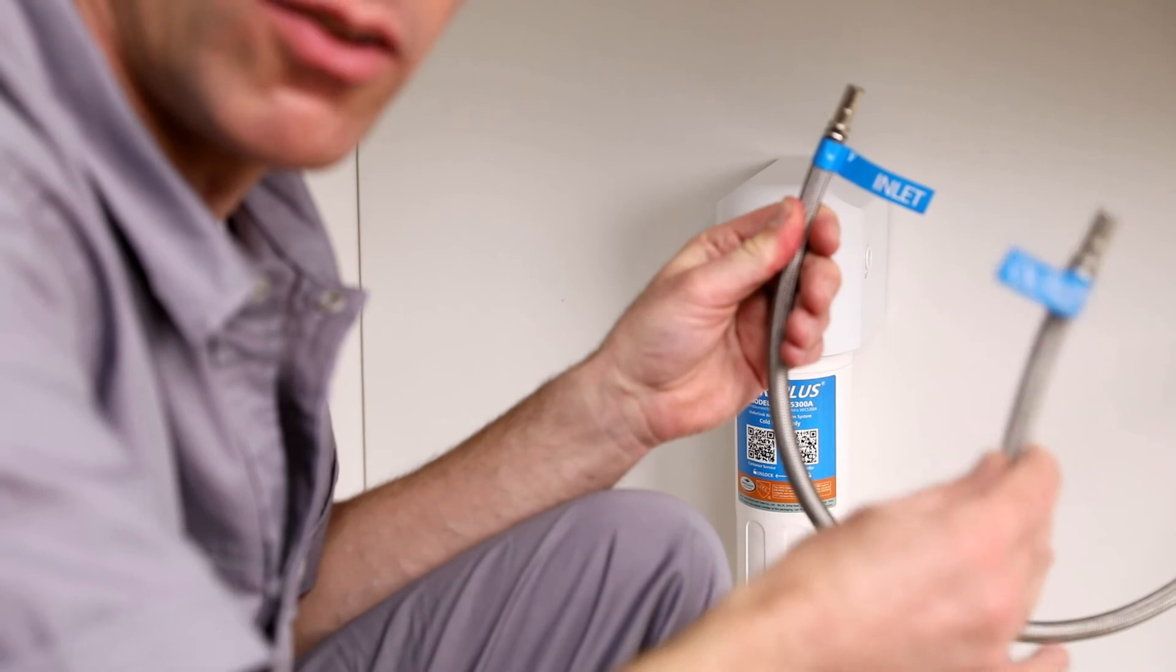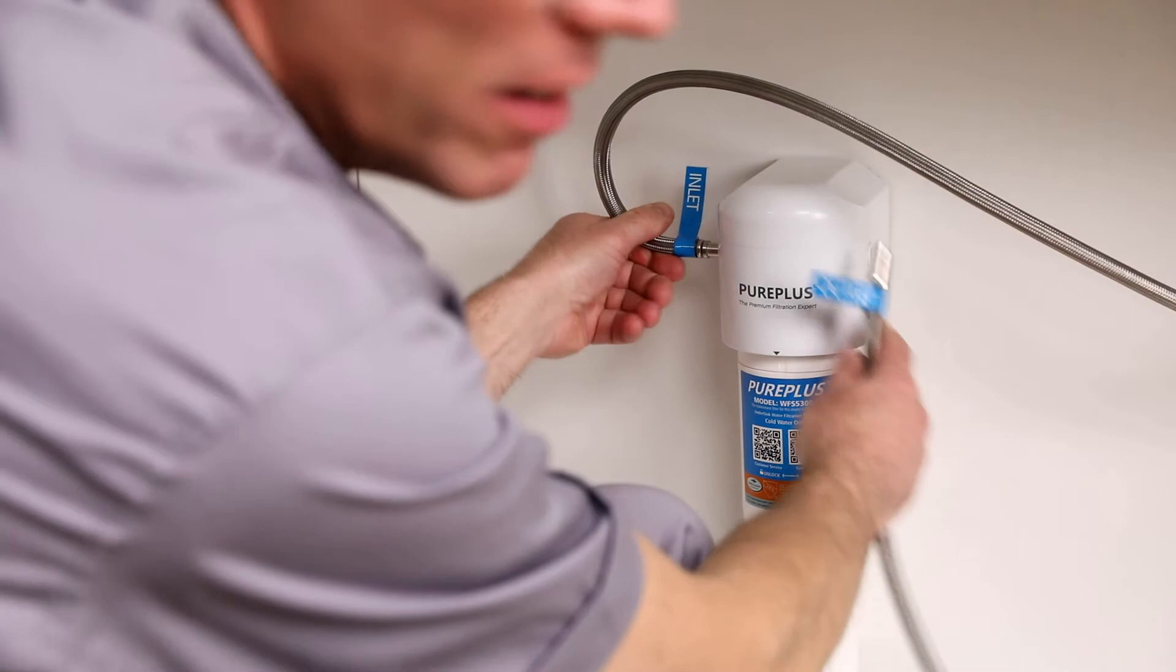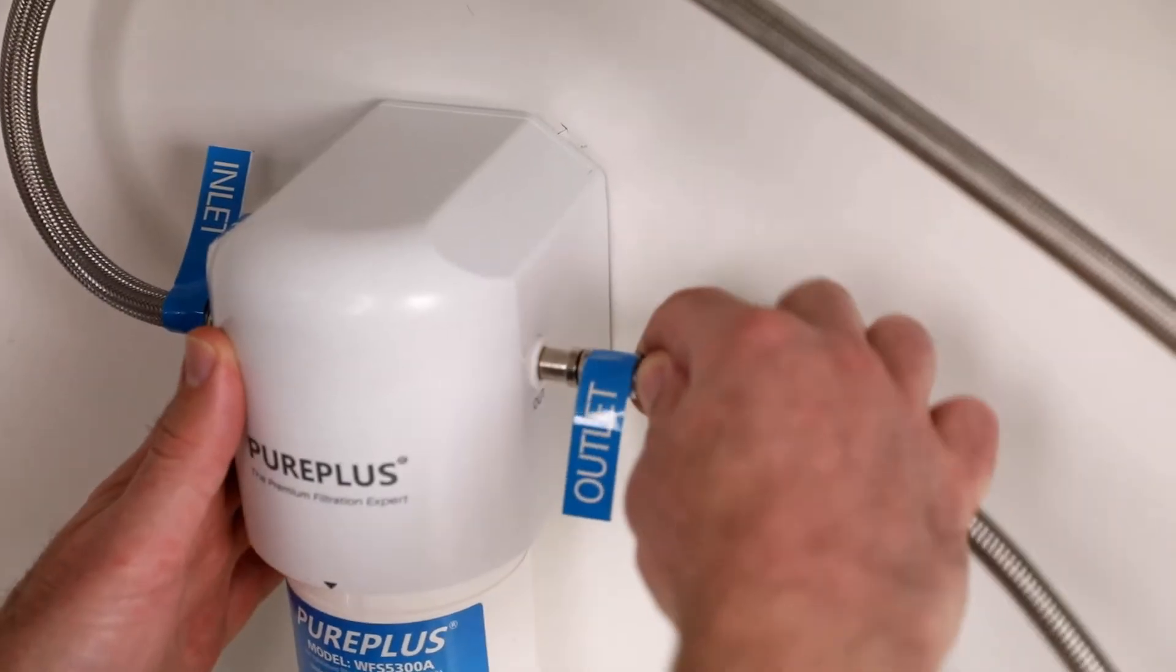Next, insert the inlet and outlet water hoses into the filter head. Push them in until you feel a little click.